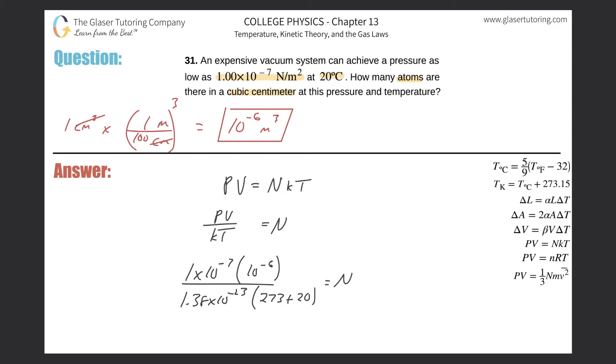And literally that's all. So this is going to be 1 times 10 to the minus 7, multiplied by 10 raised to the minus 6. Then divide that now by, in parentheses, 1.38 times 10 to the negative 23rd, times then in parentheses 273 plus 20. Close those parentheses. And here we have an N value now. The number of atoms is going to be about 2.47 times 10 raised to the 7th.